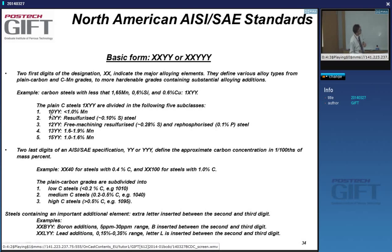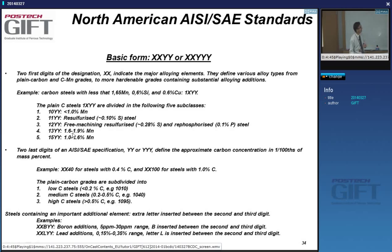Plain carbon steels are divided into subclasses. '10' means low manganese content, less than 1%. '11' means the steel is resulphurized — it contains about 0.1% sulfur. '12' means resulphurized and re-phosphorized, with higher phosphorus content to make the steel more machinable. '13' means the manganese range goes to 1.6–1.9%, and '15' covers 1.0–1.6% manganese. There is not necessarily a logical progression in the numbering.